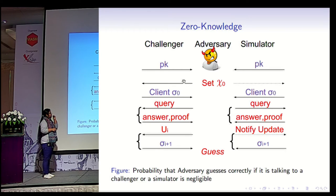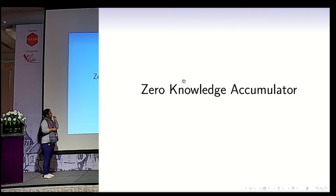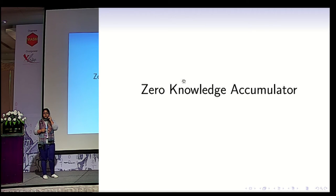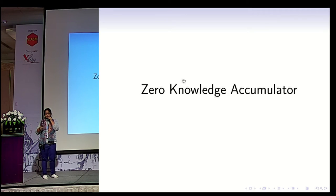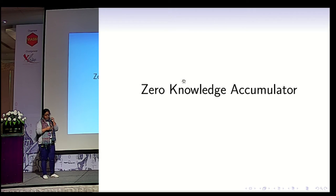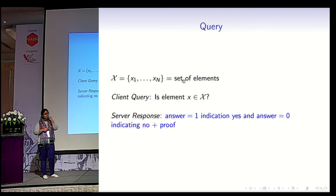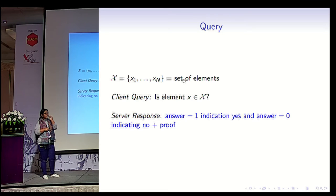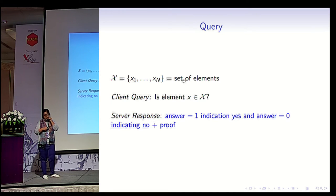That brings us to the end of the definitions. Now we go into the construction of zero-knowledge accumulators. The query is on the set of elements x1 to xn, and the query is: is the element in the set or not? The answer is yes or no, along with the proof. We have implemented this using bilinear accumulators. Before going into the construction, let's fix some notations. We represent a set as its characteristic polynomial ch(z), which is the product of (z + xi). If it is evaluated at a point s, we denote it accordingly.